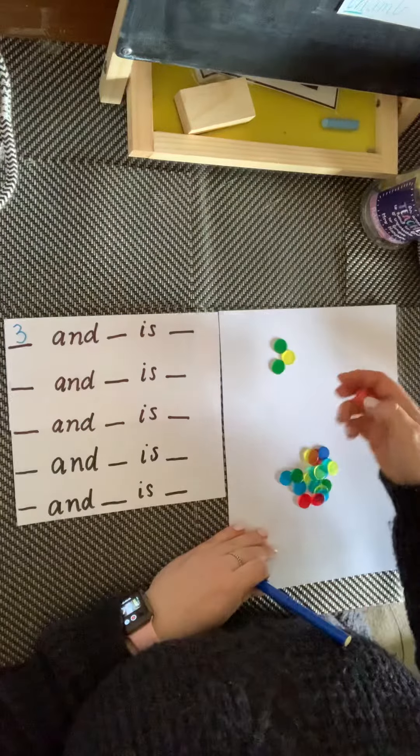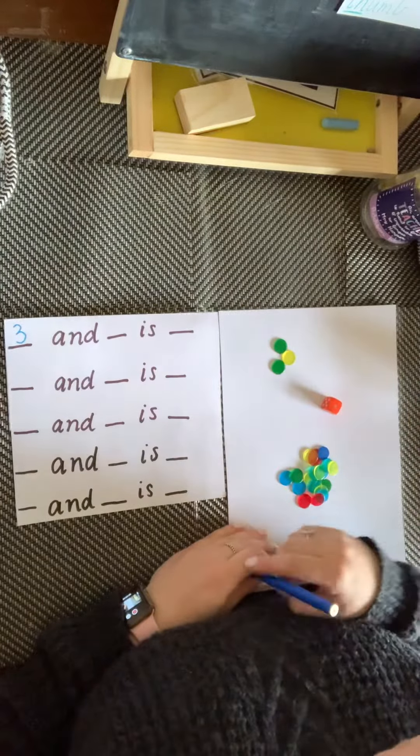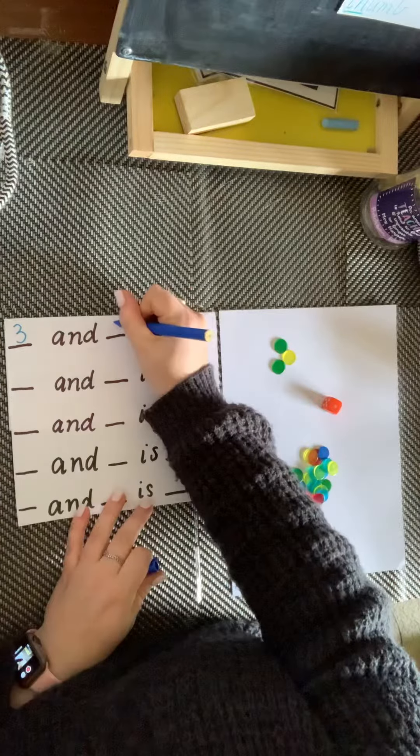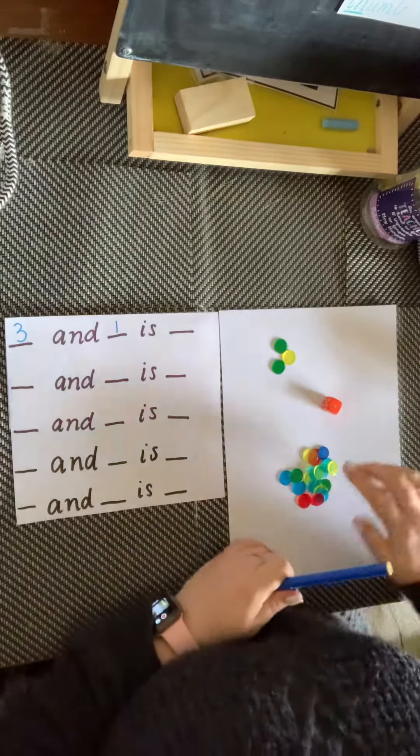Then we roll the dice again. Oh, number one. Write the number. Collect that number of objects.